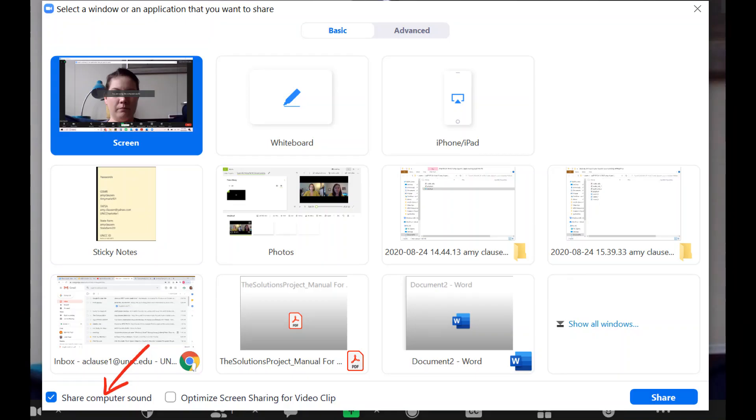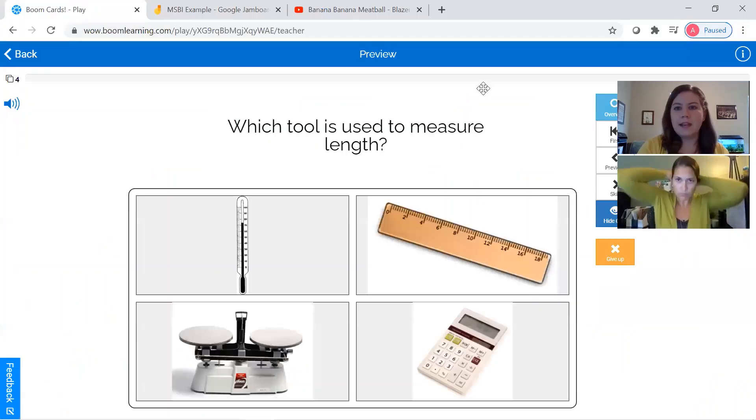So when I click to share my screen, I'm going to make sure I have share computer sound clicked so that Melissa can hear her reinforcer at the end. And then, up at the top of my toolbar, I'm going to click remote control and give mouse keyboard control to Melissa Tapp so that we can both access the materials on the screen.